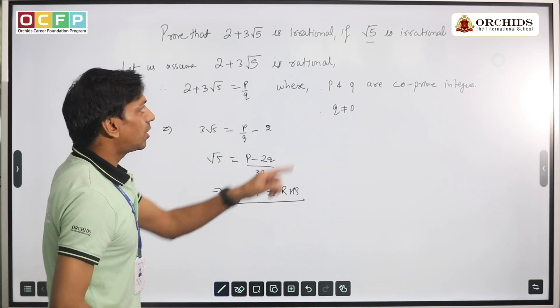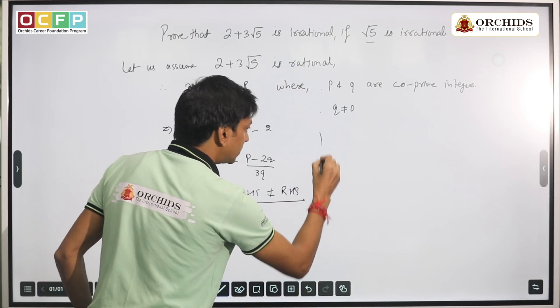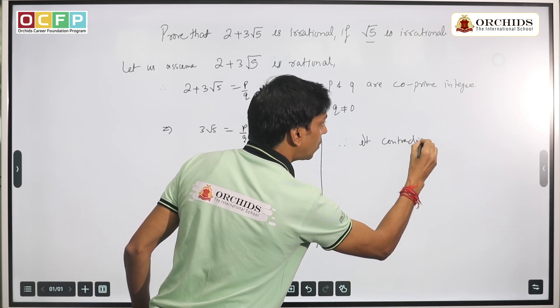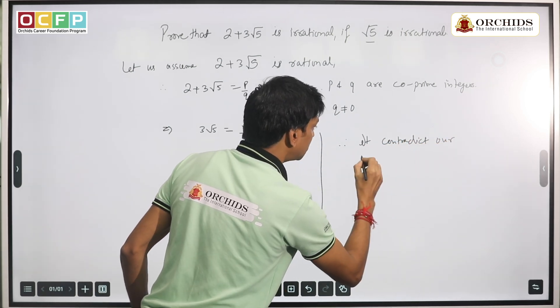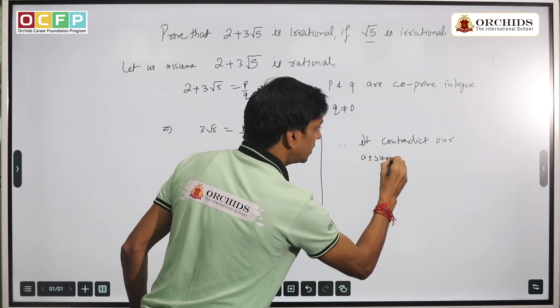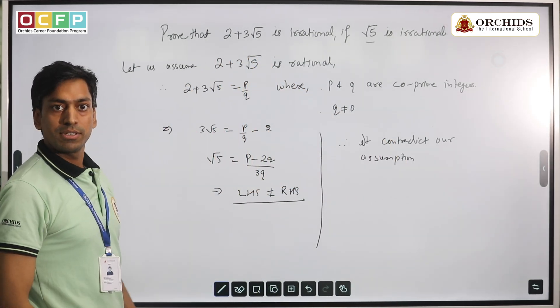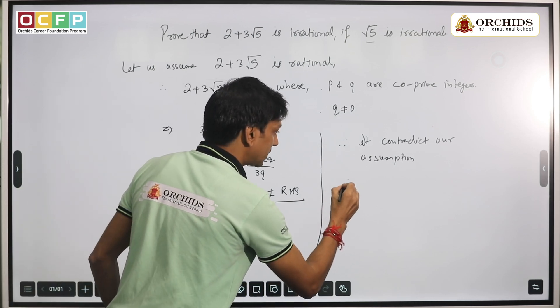This contradicts our assumption. Therefore, we will write: this contradicts our assumption. And what assumption have we taken here? The assumption taken is that 2 + 3√5 is rational.